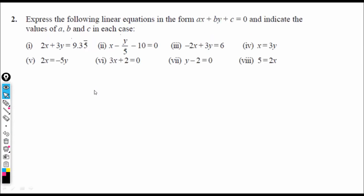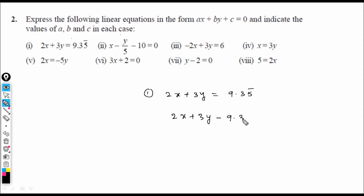Let us look at the next question. Express the following linear equations in the form ax + by + c = 0 and indicate the values of a, b, and c in each case. First: 2x + 3y = 9.25. So, 2x + 3y − 9.25 = 0. Here a = 2, b = 3, c = −9.25.